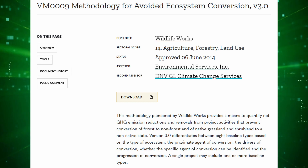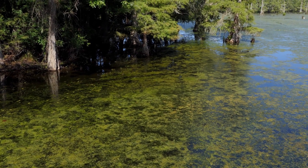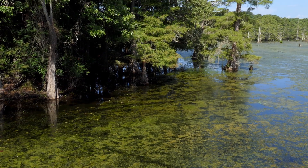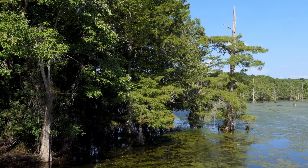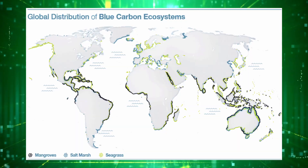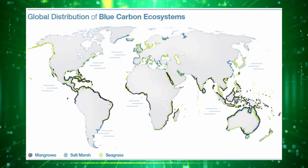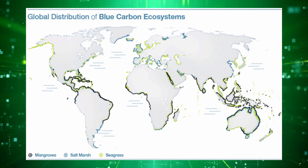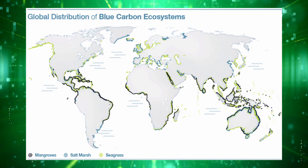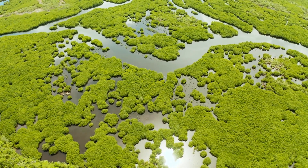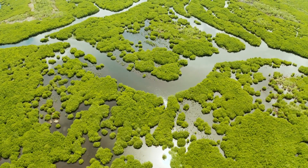Forest restoration and preservation is one of the most prevalent project types, and this doesn't just apply to trees on land. Mangrove forests generate what people call blue carbon offsets, which have been quite popular recently. Mangroves grow in coastal waters across the globe, and there are also methodologies for the creation and restoration of wetlands and seagrass, sequestering carbon through increased biomass and within the soil.